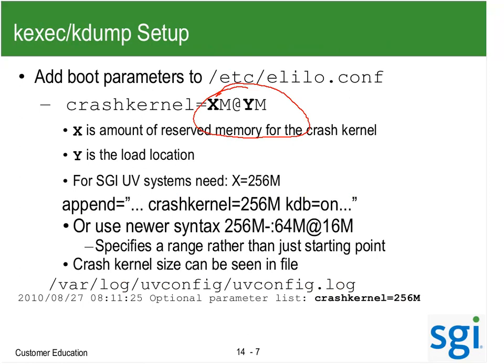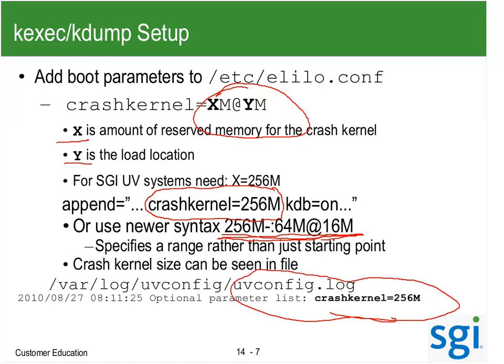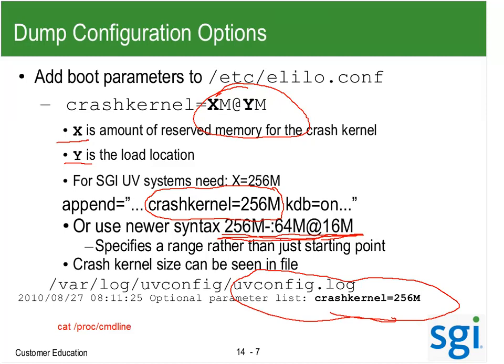In elaudo.conf, X is the amount of memory reserved and Y is the load location. Here's the newer syntax — it specifies a range rather than just a starting point, and Mike was talking about that as well. The crash kernel size can be seen in the file /var/log/uv/config, and you can also see it in your 'cat /proc/cmdline' output. It is all set up by default and working; however, at this point you're going to have to do a manual reset.